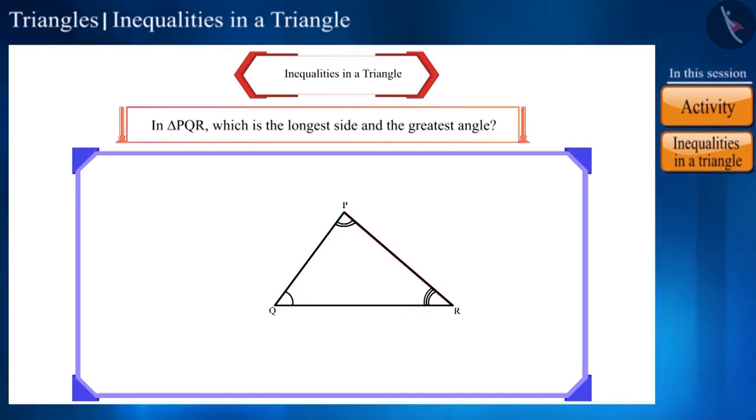Here, let us increase side RP a little more to the point P' and let's connect Q to P'. Now you can see that as we increase the length of side RP, it also increases the measurement of angle Q. And now, here RP' is the longest side and angle Q is the greatest angle.